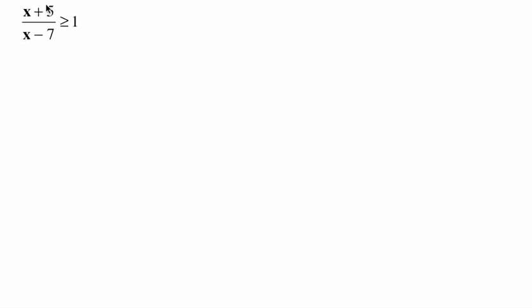Question number 13. Here we have x plus 5 divided by x minus 7 is greater than or equal to 1. That's a little bit different — we're used to seeing it being greater than or equal to 0.